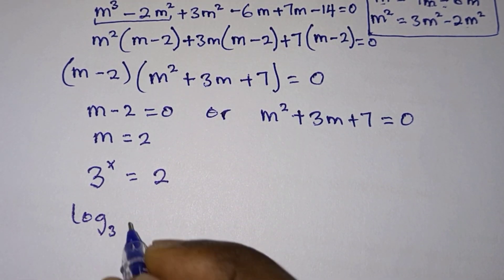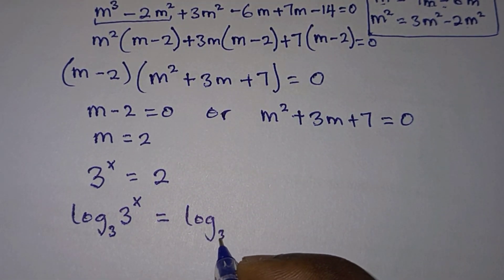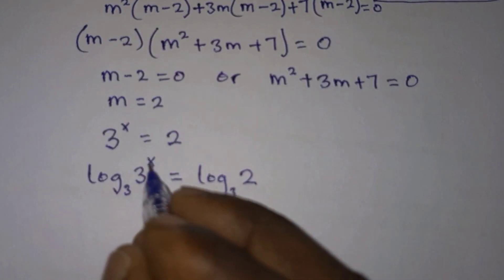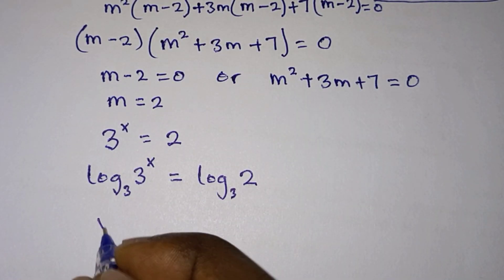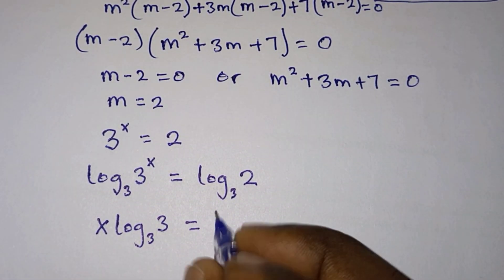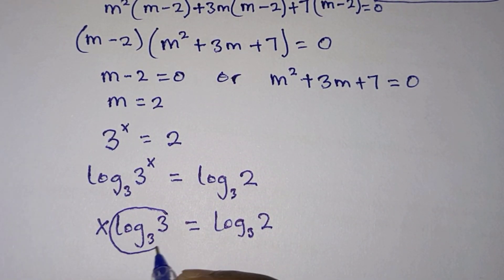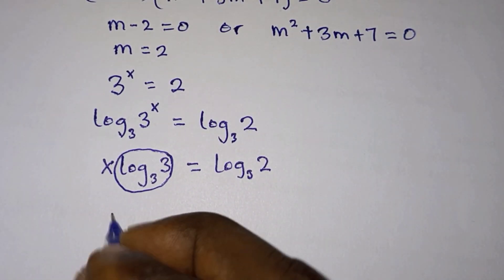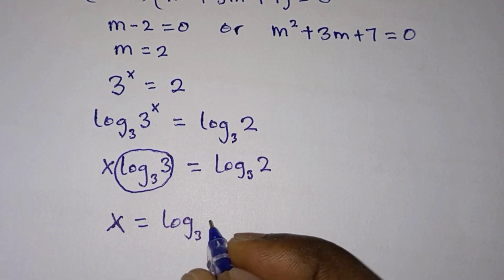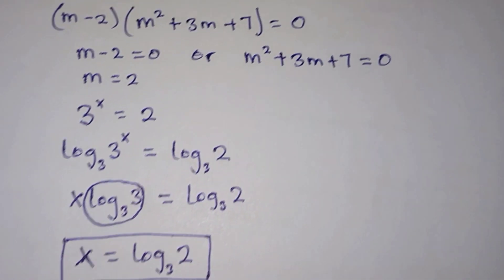From m minus 2 equals zero, we get m equals 2, which means 3 to the power x equals 2. Taking log base 3 of both sides, and using the property that the power becomes the leading number, we get x times log base 3 of 3 equals log base 3 of 2. Since log base 3 of 3 equals 1, therefore x equals log base 3 of 2 as one of the solutions.